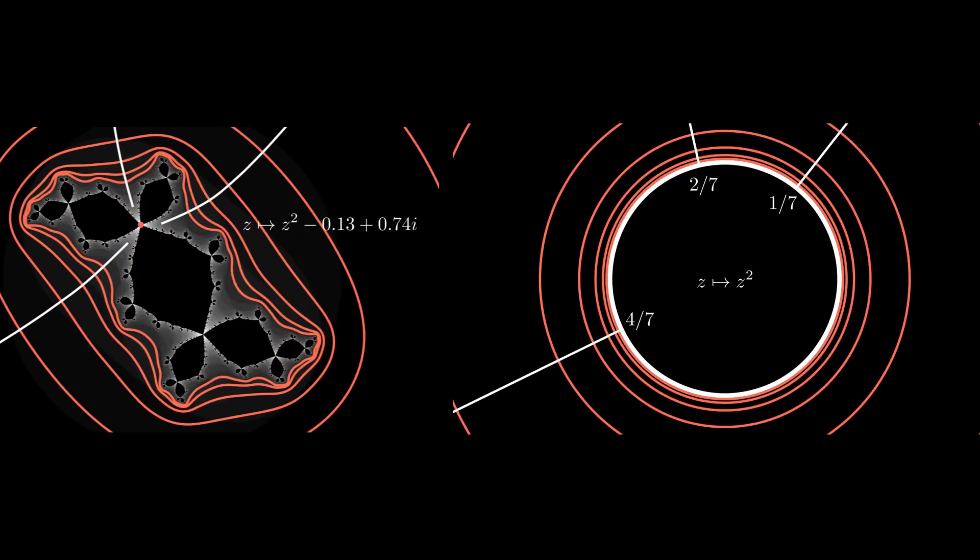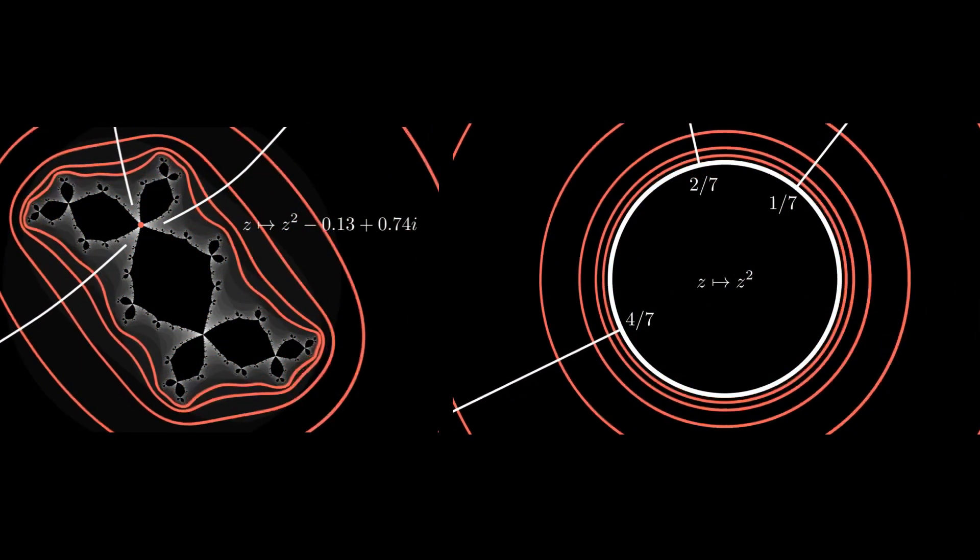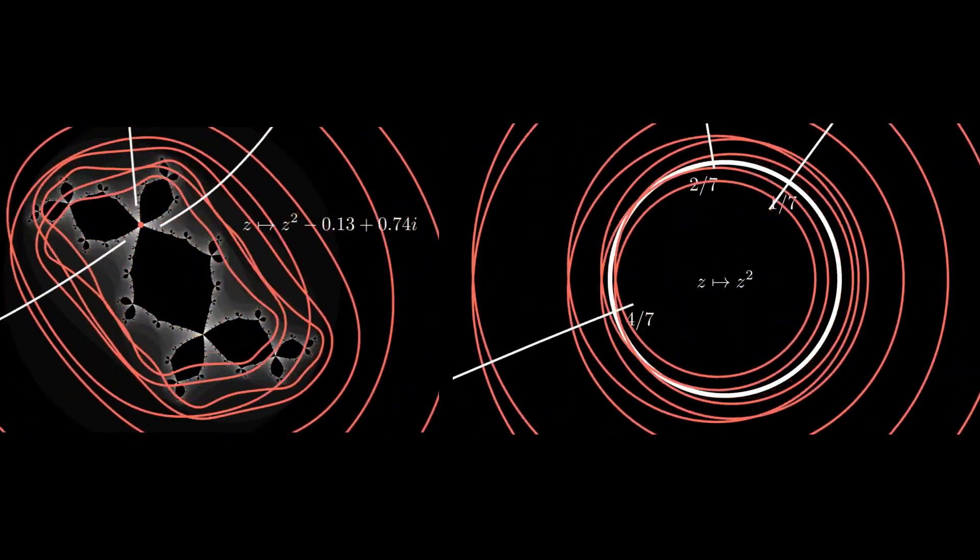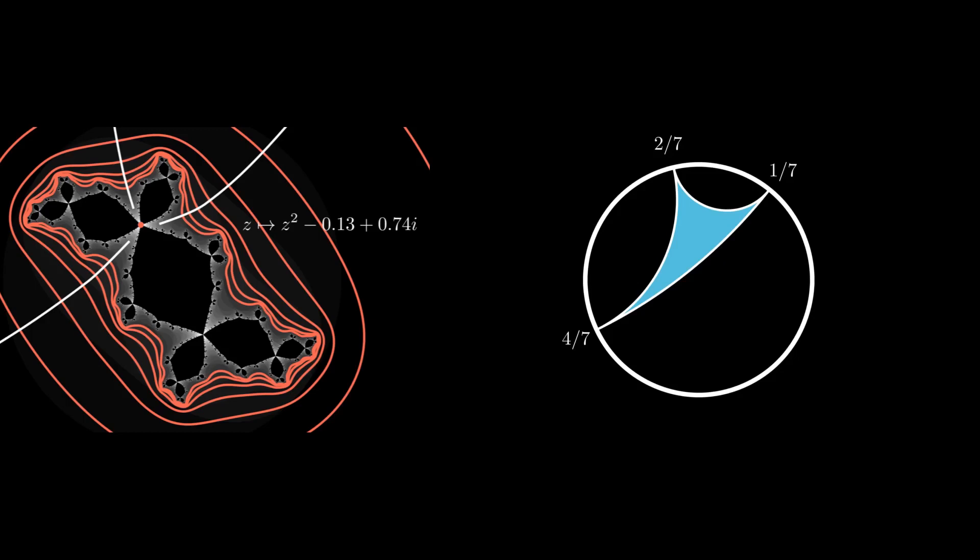The thing to notice is that the period 3 external rays rotate about a single fixed point, while the three rays on the circle are separate. To account for this, we identify the three rays by drawing cords inside the unit disk between their landing points.